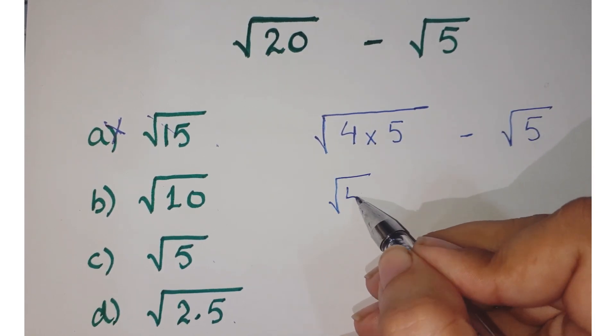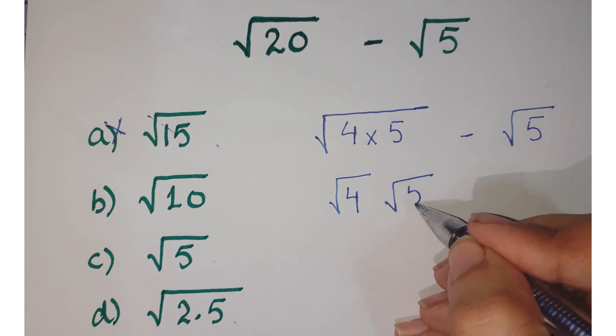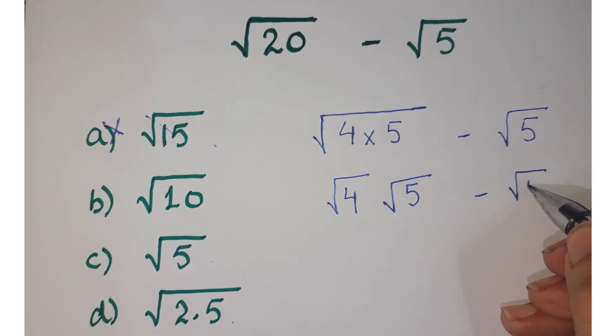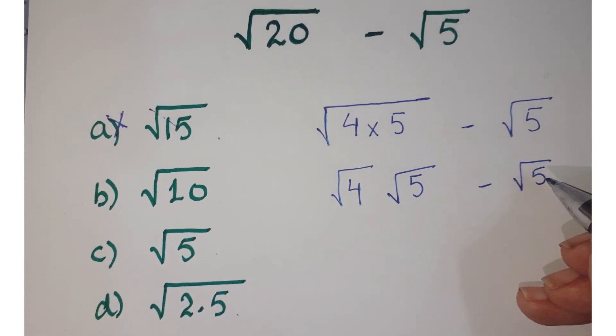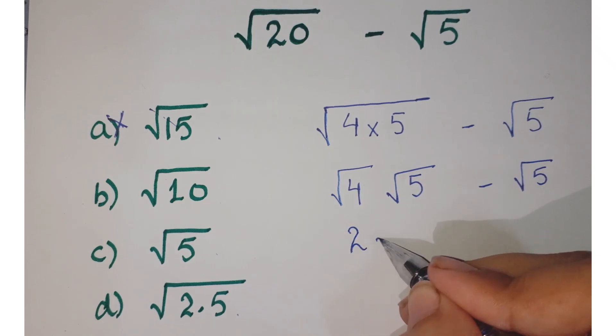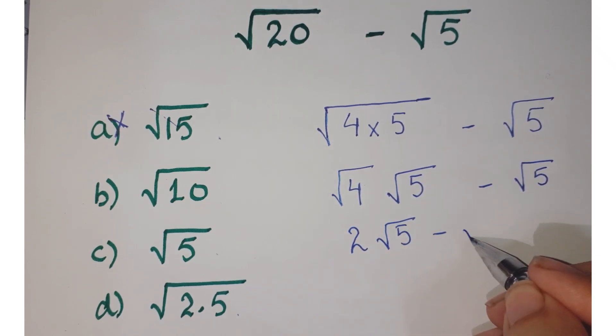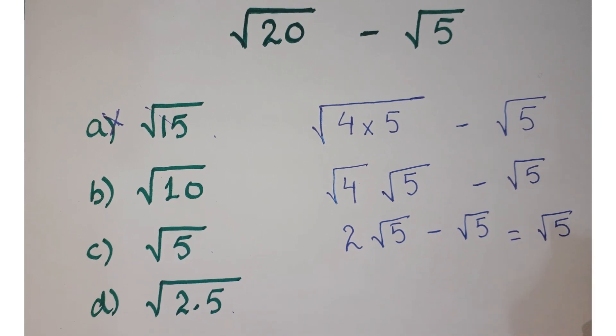Now this 4 can be written as square root of 4 times square root of 5 minus square root of 5. Now 4 is a perfect square, so just write 2 square root of 5 minus square root of 5, which equals square root of 5.